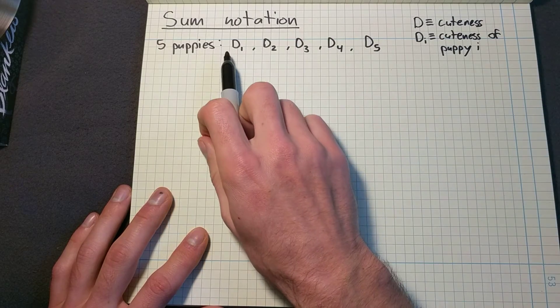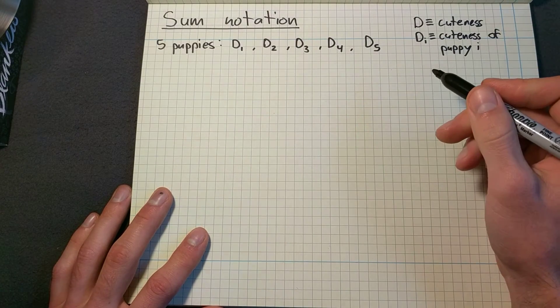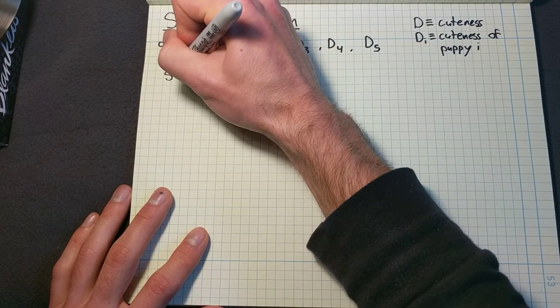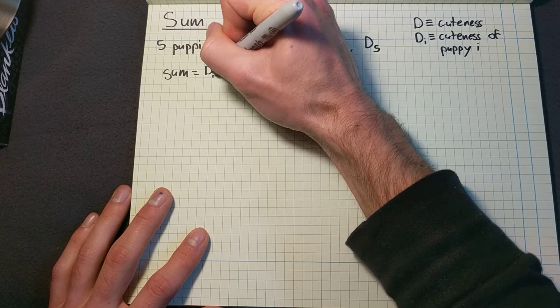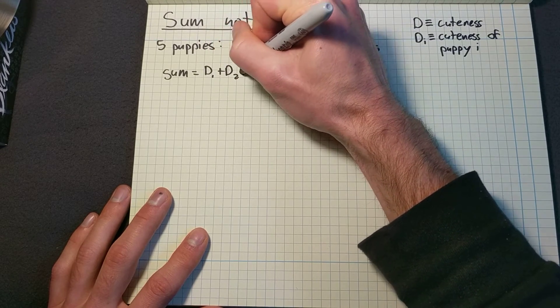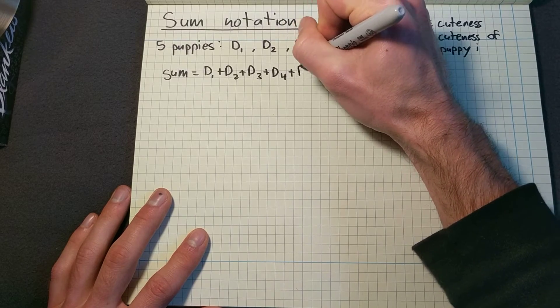And I want to take the sum of all the cuteness for these five dogs. So in this case, the sum is D one plus D two plus D three plus D four plus D five. Not too bad.